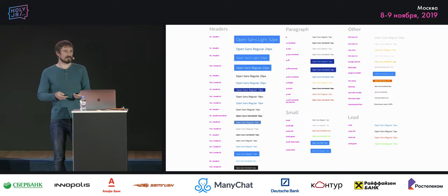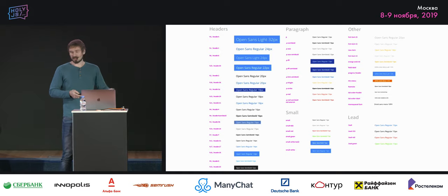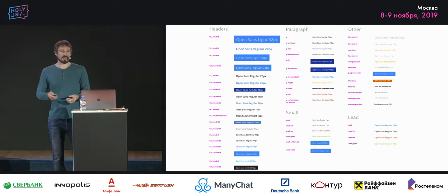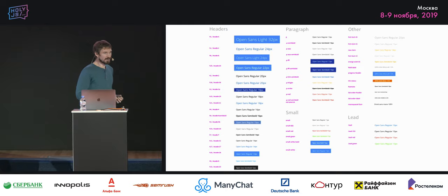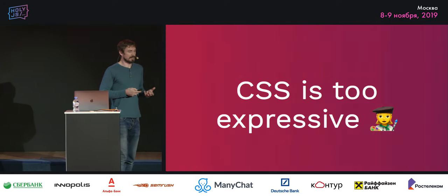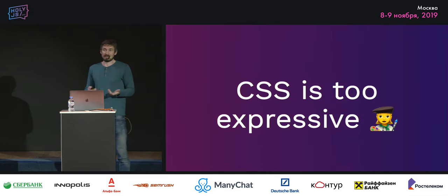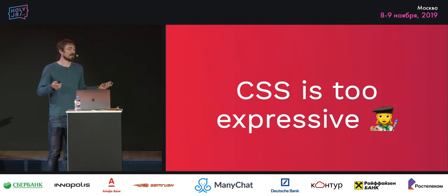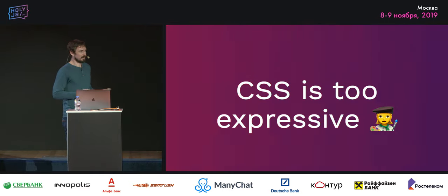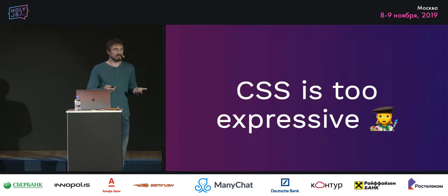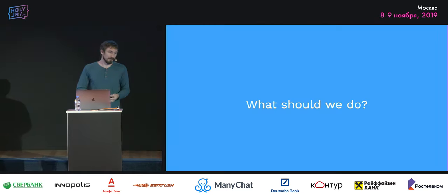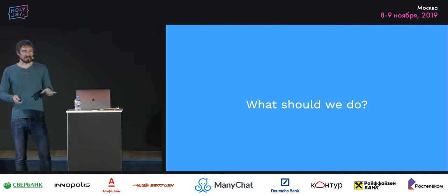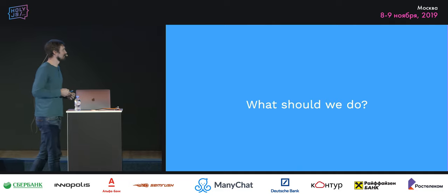There are lots of such examples on the web — not only buttons but typography as well. One website had dozens of header styles and paragraph styles, just because CSS is too expressive. That's not necessarily a bad thing, but that power gives you the ability to break things. If you can break something, eventually someone will. So what should we do? I think we should stop writing CSS — but this is in context, so don't leave just yet.